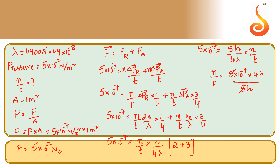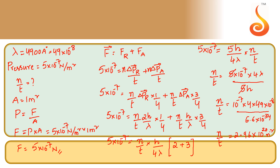Substituting lambda = 49 × 10⁻⁸ and h = 6.6 × 10⁻³⁴: n/t equals 10⁻⁷ × 4 × 49 × 10⁻⁸ divided by 6.6 × 10⁻³⁴. By simplifying, we get approximately 2.96 × 10²⁰, or n/t ≈ 3 × 10²⁰ photons per meter square per second.